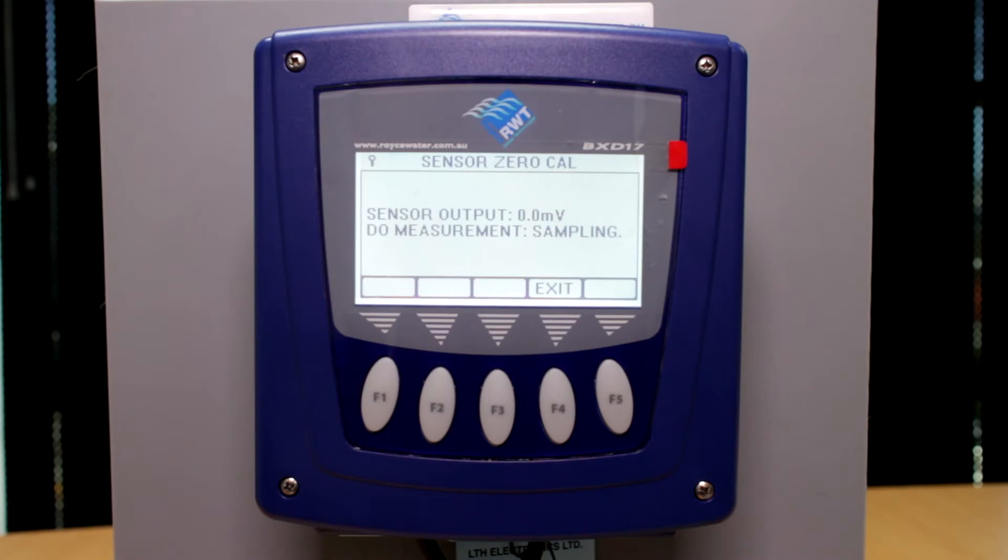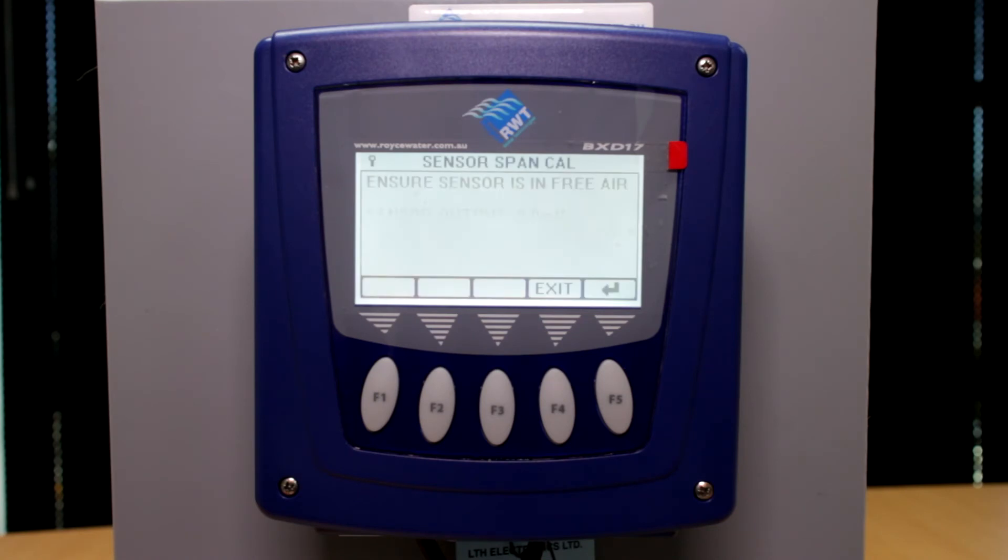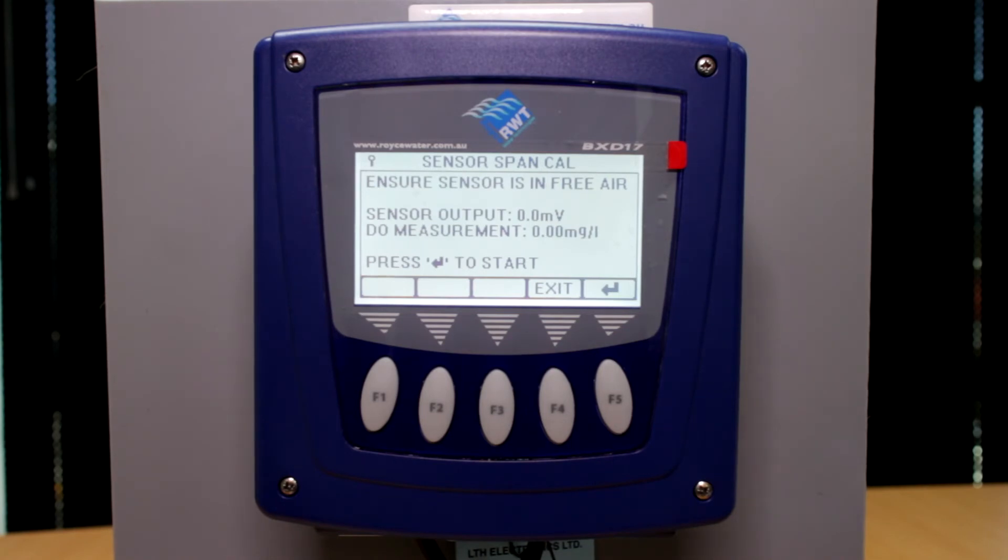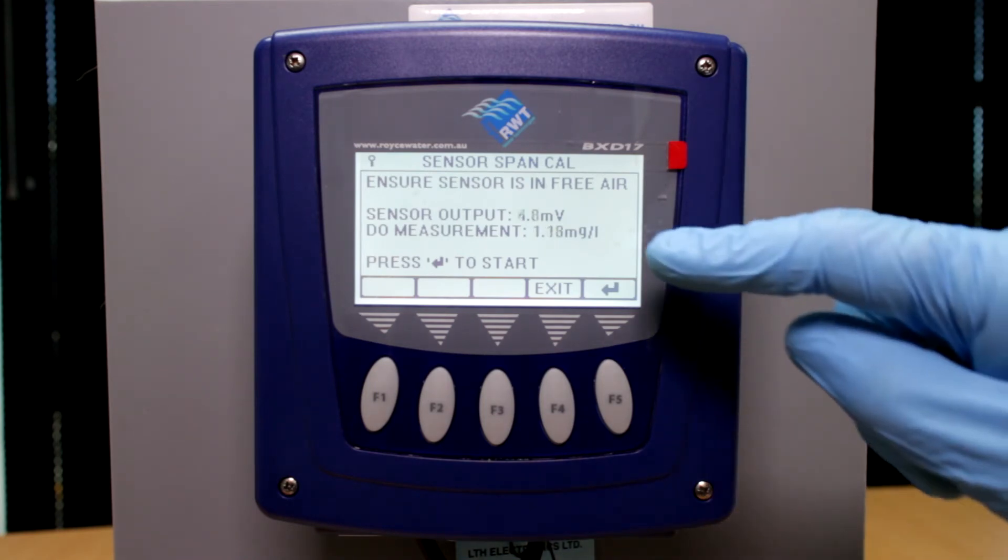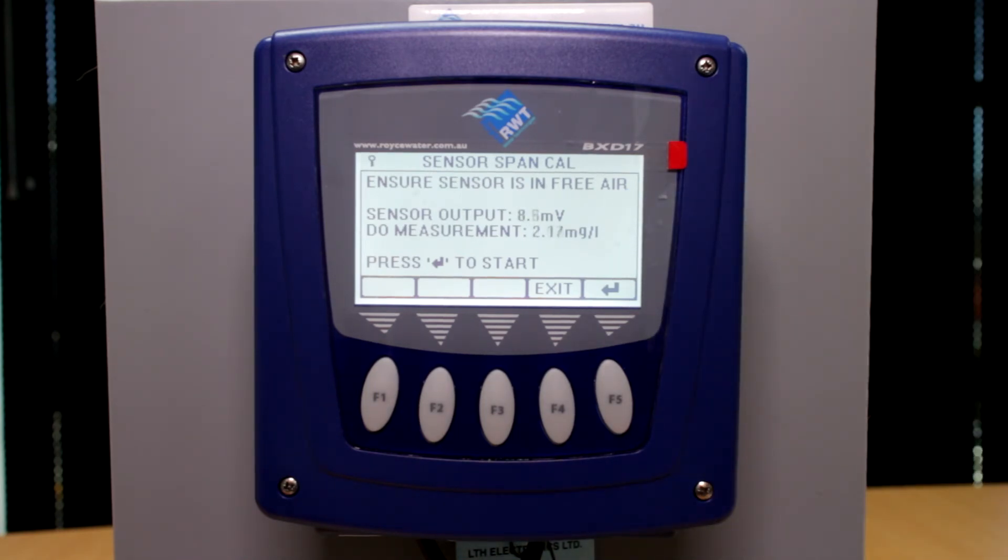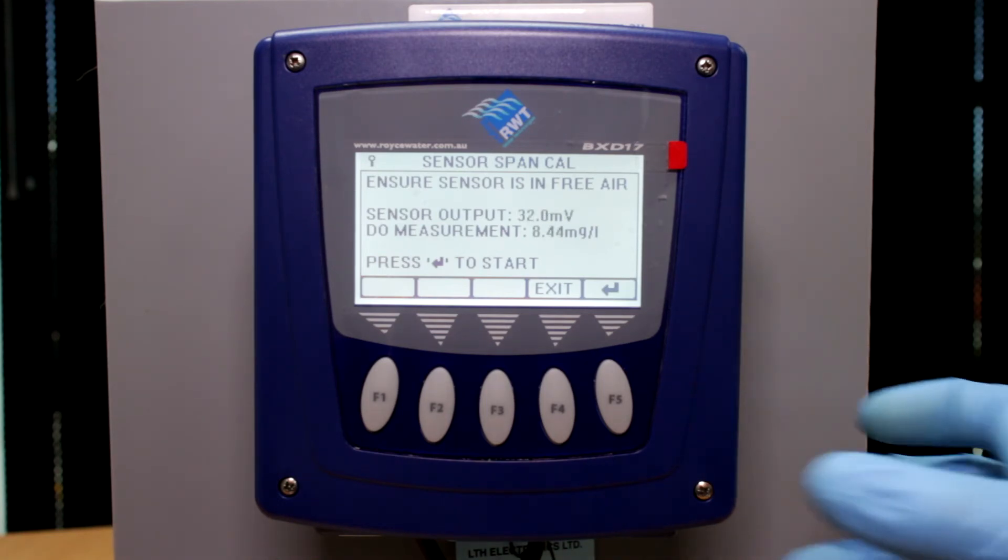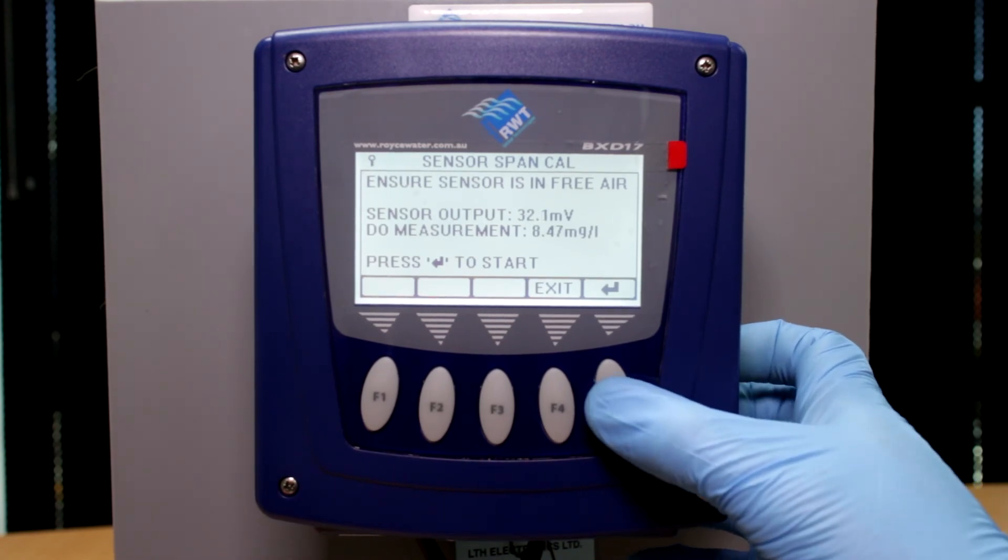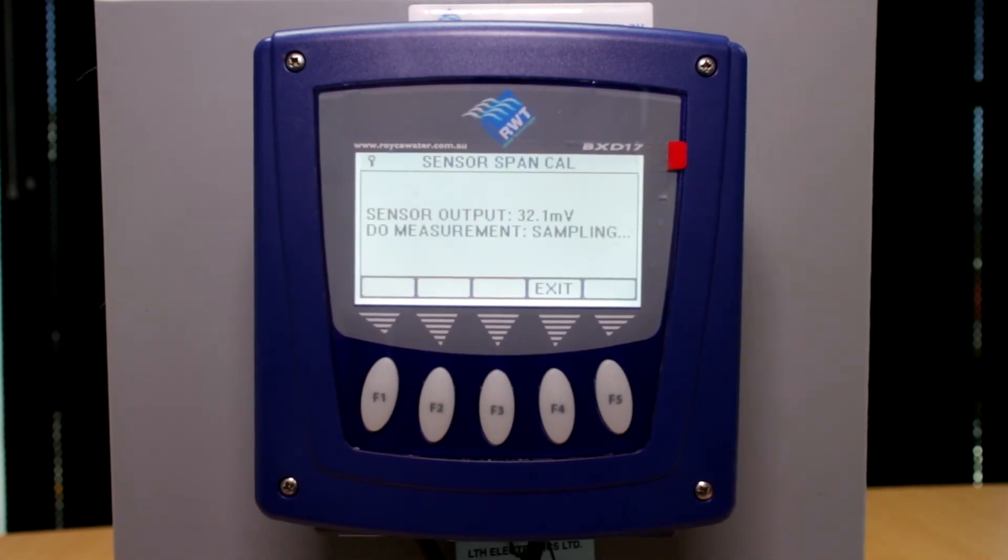Once the zero DO condition has been set, the BXD will instruct you to put the sensor in free air. Make sure the sensor is not in direct sunlight as this will cause errors. You'll notice the millivolt signal climbing. Once the millivolt signal has stabilized, we can push the enter button which is F5. This is now sampling free air conditions.